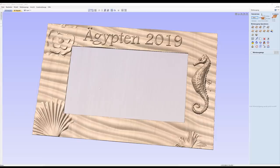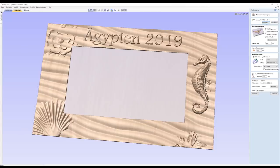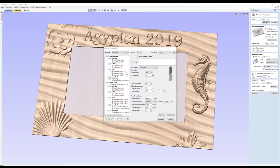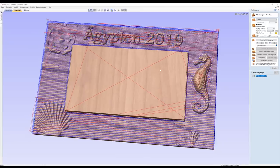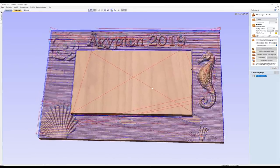Creating the toolpaths for the 3D carve is also pretty simple. At first you choose the strategy. So first a roughing strategy. Then the tool. In my case the same 6mm end mill as before. And I won't dive into the other settings again. Just calculate that. And that's the toolpath I got for that.